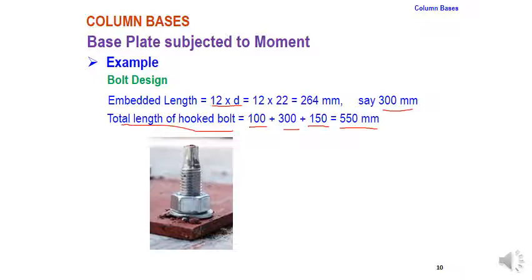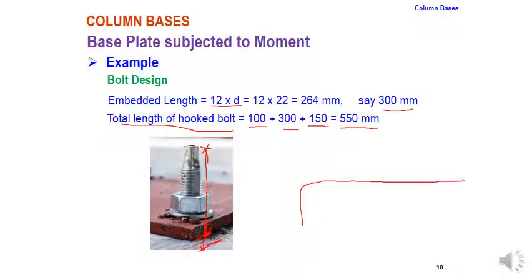To understand this physically: the concrete foundation has the base plate on top. The hook bolt passes through the base plate; all length below the base plate is embedded in concrete. Above the base plate, the bolt accommodates the washer, nut, screwed portion, and a plain portion — all of which are outside the concrete foundation.